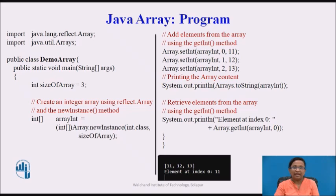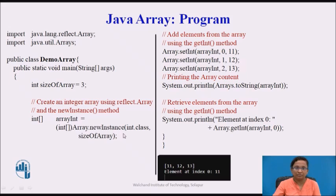Here is a simple program to demonstrate Array class usage in Java. First, we have declared the array size with the variable name sizeofarray. Then we created an integer array using the Array class from java.lang.reflect package. From this Array class, we used the newInstance() method, which creates a new instance of this array of type int. The parameters passed to newInstance() are: the first parameter is the type and the second is the size of the array. We then typecast the result into a particular integer type.